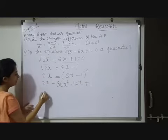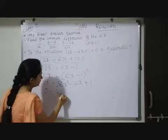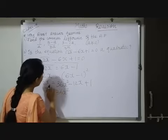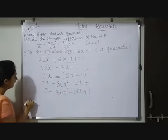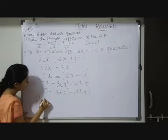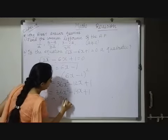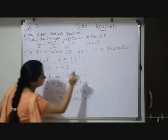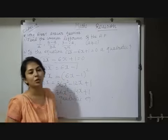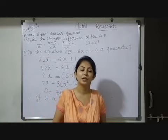Shift it towards RHS. So we will get 0 equals 36X square minus 12X minus 2X, that is minus 14X plus 1. Therefore it is a quadratic equation. So children, hope both of these questions are understood to you. Thank you.